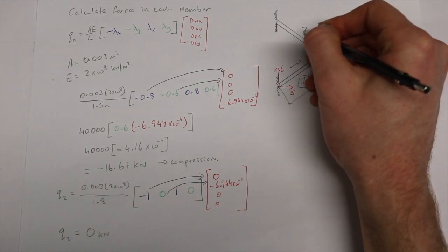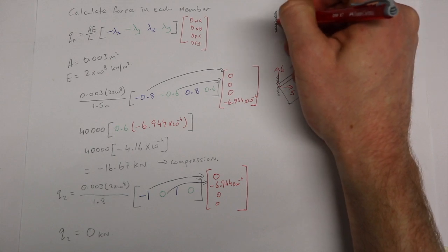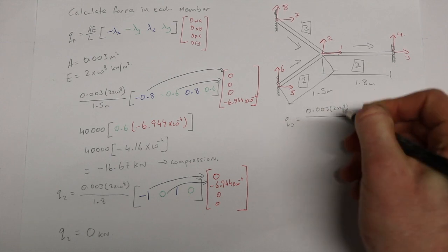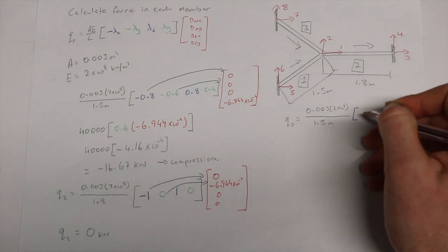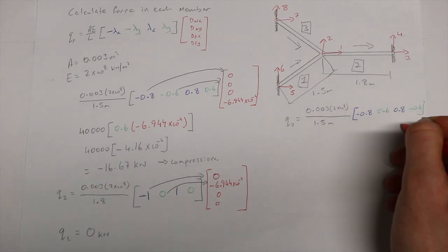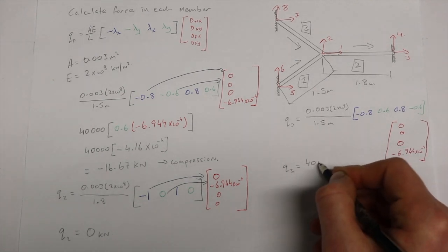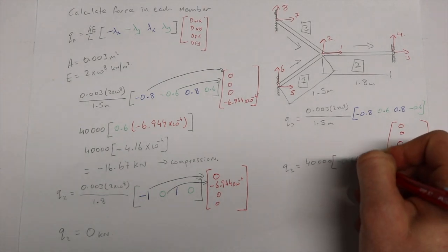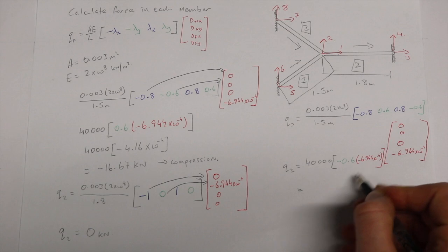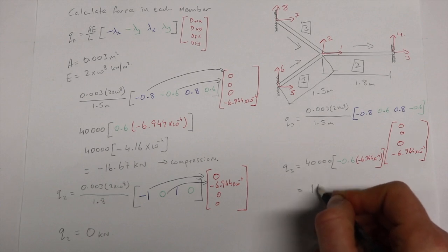We now calculate the force in member 3 and we should be expecting a similar result to the force in member 1, as it is the same length, same cross sectional area and stiffness. Our lambda x and lambda y are 0.8 and minus 0.6. Therefore we should expect a similar value, 16.67 kN, but this time it is positive, therefore telling us that the member is in tension.